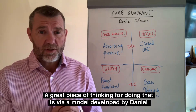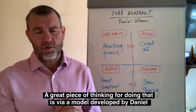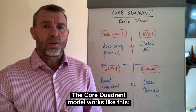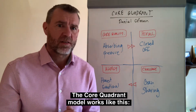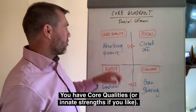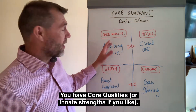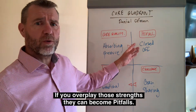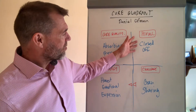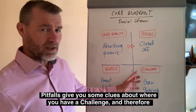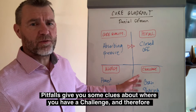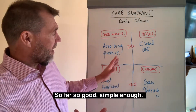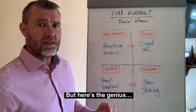A great piece of thinking for doing that is via a model developed by Daniel Offman called core quadrants. The core quadrant model works like this: you have core qualities or innate strengths. If you overplay those strengths they can turn up as pitfalls. Pitfalls give us some clues about where our challenges are and therefore what our development areas are. So far, straightforward and pretty simple.